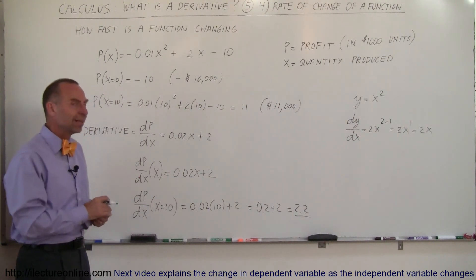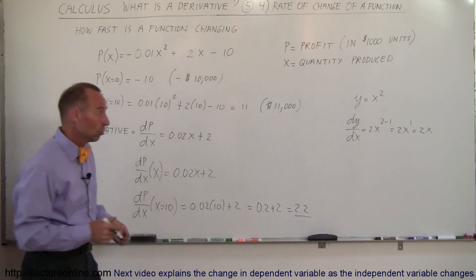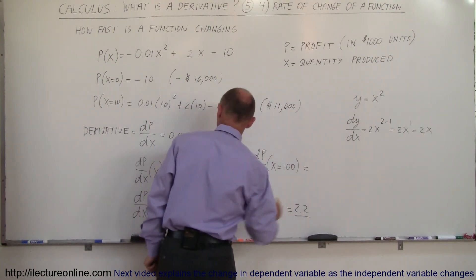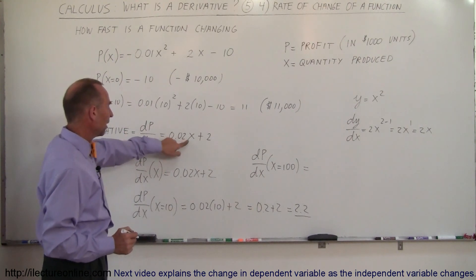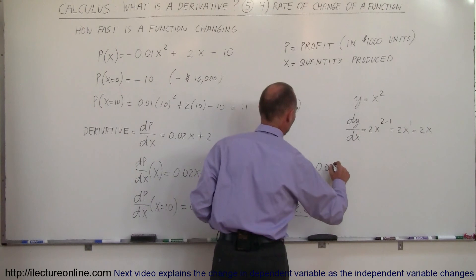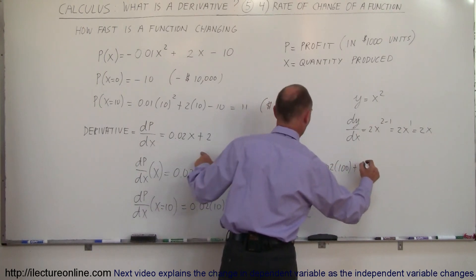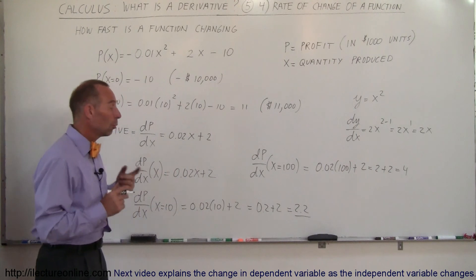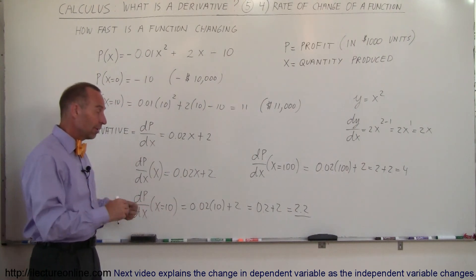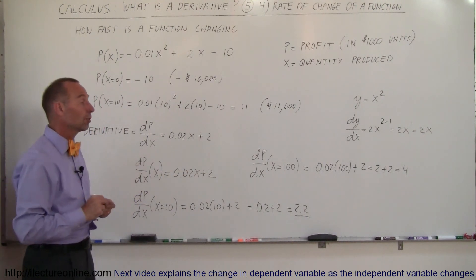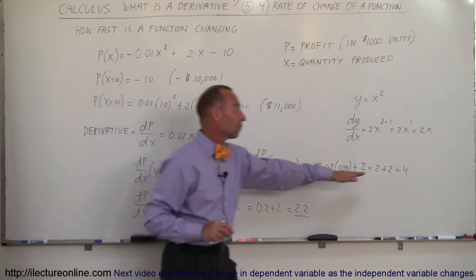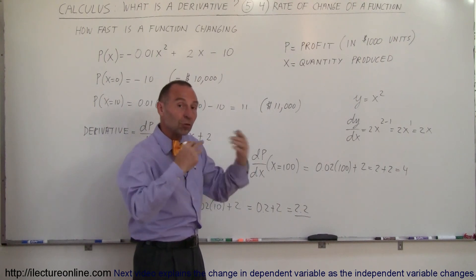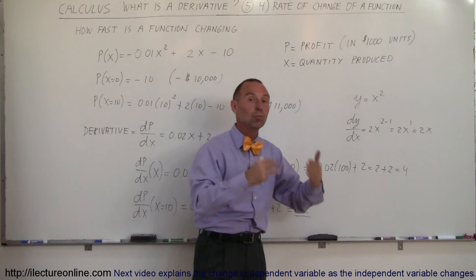Now let's find how fast profit is changing if I build 100 units. Plugging x = 100 into dp/dx: 0.02 × 100 + 2 = 2 + 2 = 4, which in units of $1,000 means $4,000 per unit. So at 100 units, every additional unit made adds $4,000 in profit, because the overhead cost is a smaller percentage of total cost.